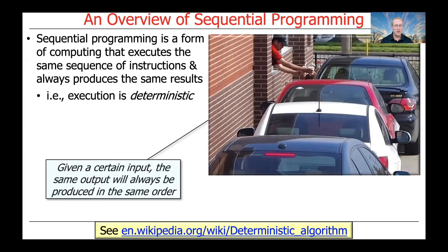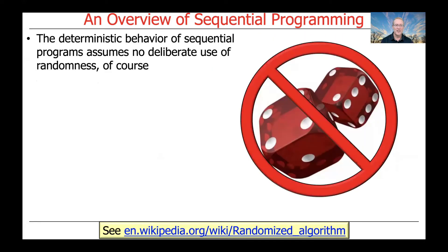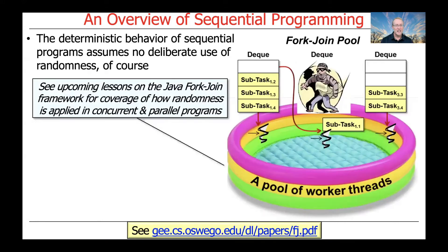For example, consider a drive-through lane in a fast-food restaurant. The order in which the people receive their food is the same order that they place their requests. The deterministic behavior of sequential programming assumes no deliberate use of randomness, of course. See upcoming lessons in the Java Fork Join Framework for coverage of how randomness is applied in concurrent and parallel programs.